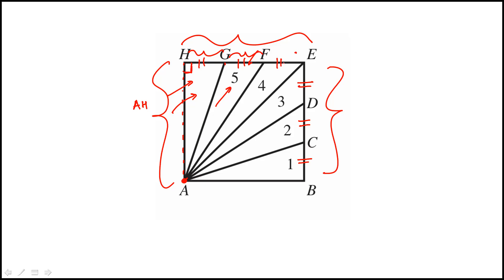And same thing for triangle number 4. The base is EF, which is the same as these other two lengths, and the altitude is still AH.